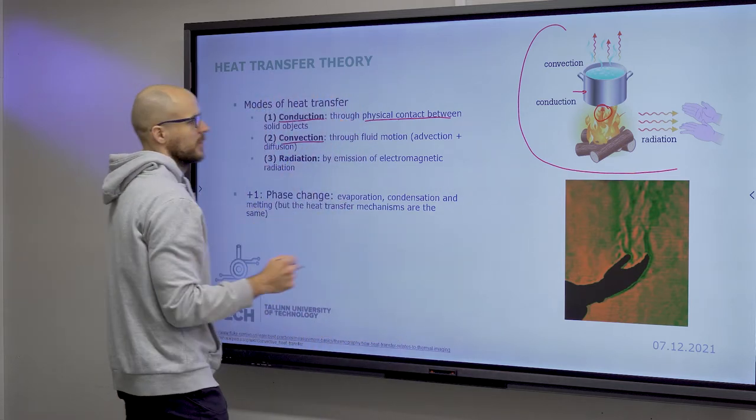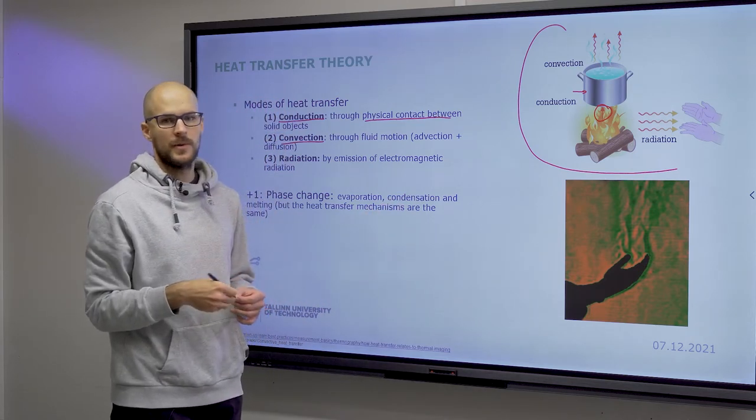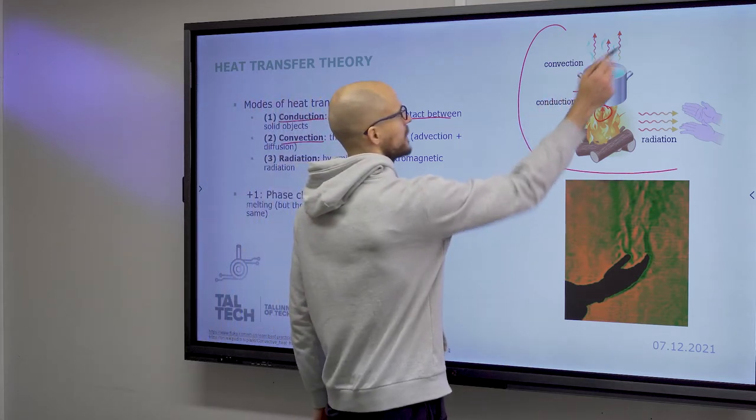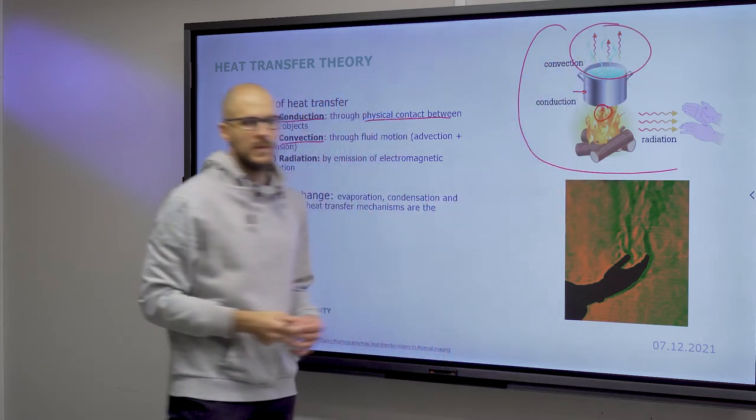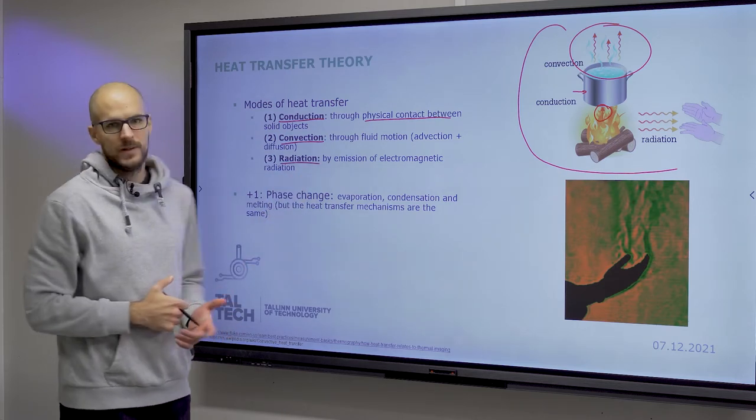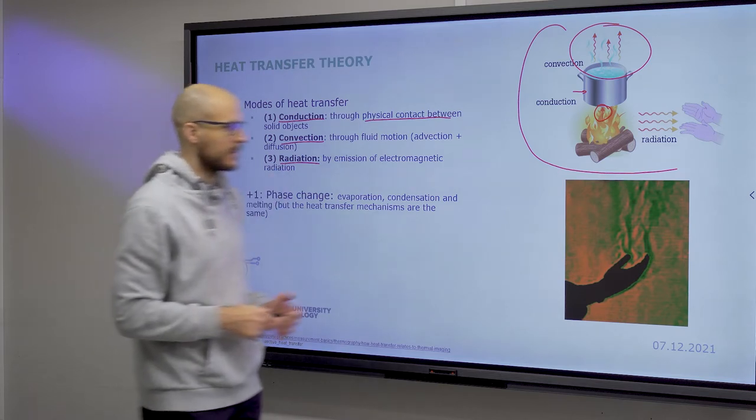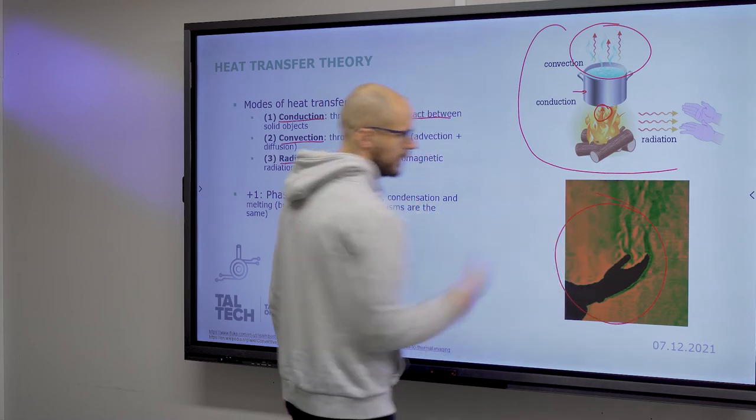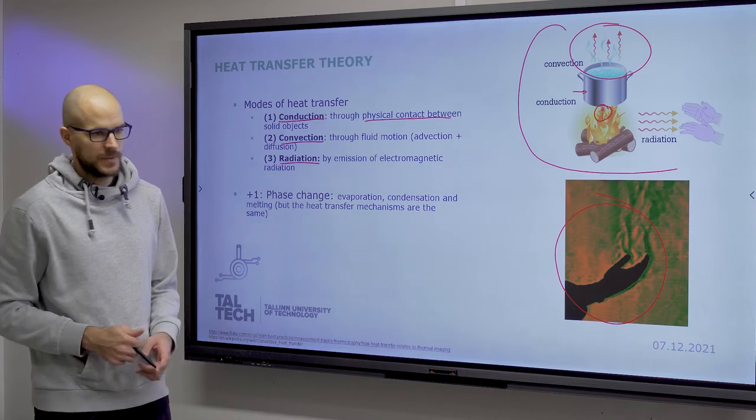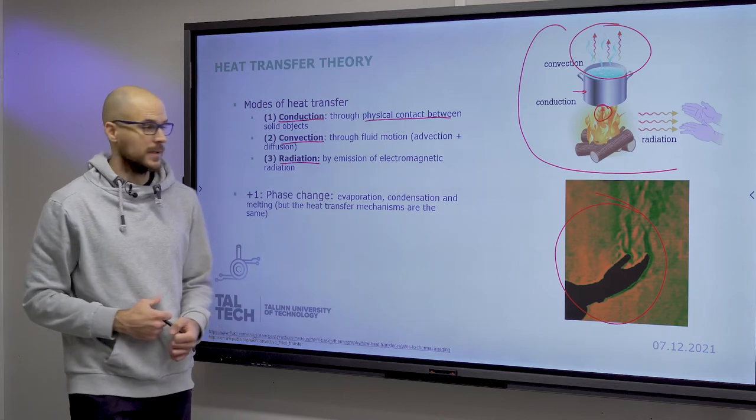Convective heat transfer would be through fluid motion, advection and diffusion, which you might recall from the Fluid Mechanics 2 lecture. This would be from solid to fluid, air or liquid. Radiation is black body emissions or black body radiation, emission of electromagnetic radiation. You can see an image of that taking place from our body. We emit quite a lot of heat through our skins.